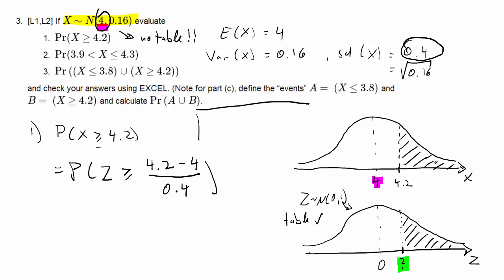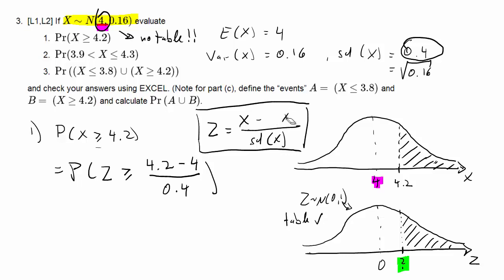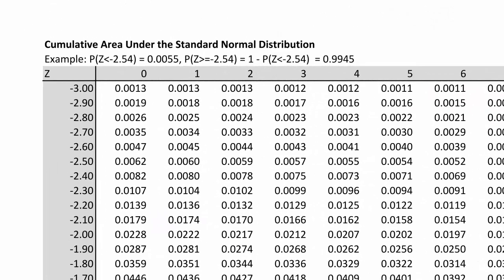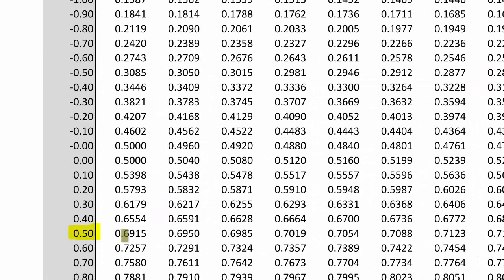The standardization formula is that the z random variable equals the value of x minus the mean of x divided by the standard deviation of x. You will often see the notation mu_x for the mean and sigma_x for the standard deviation, but it's the same. So the z-value we're looking for is 4.2 minus 4, divided by 0.4, which is 0.2 divided by 0.4 — that's 0.5. So z = 0.5 corresponds to x = 4.2 in the distribution with mean 4 and standard deviation 0.4.